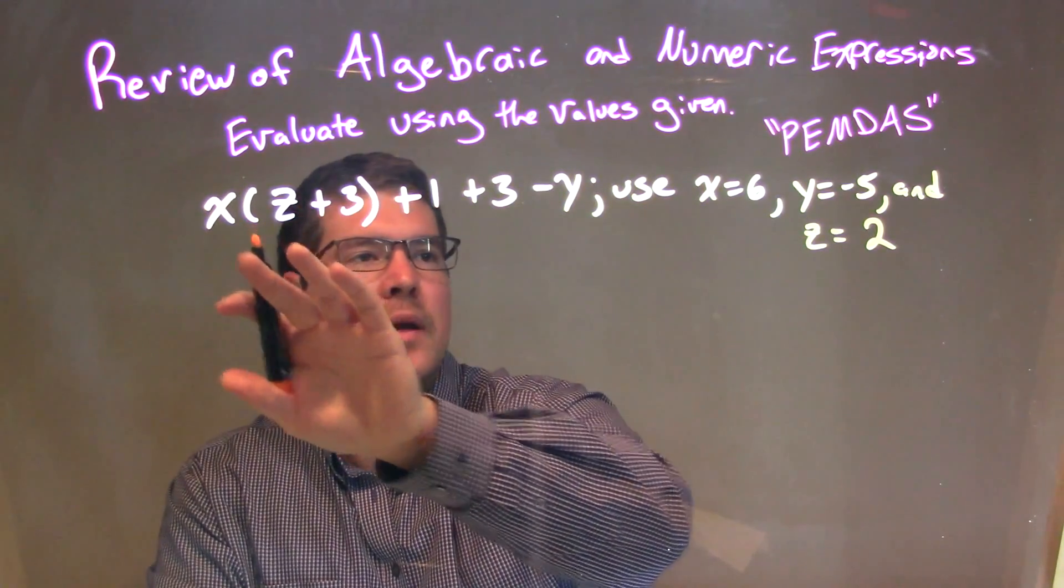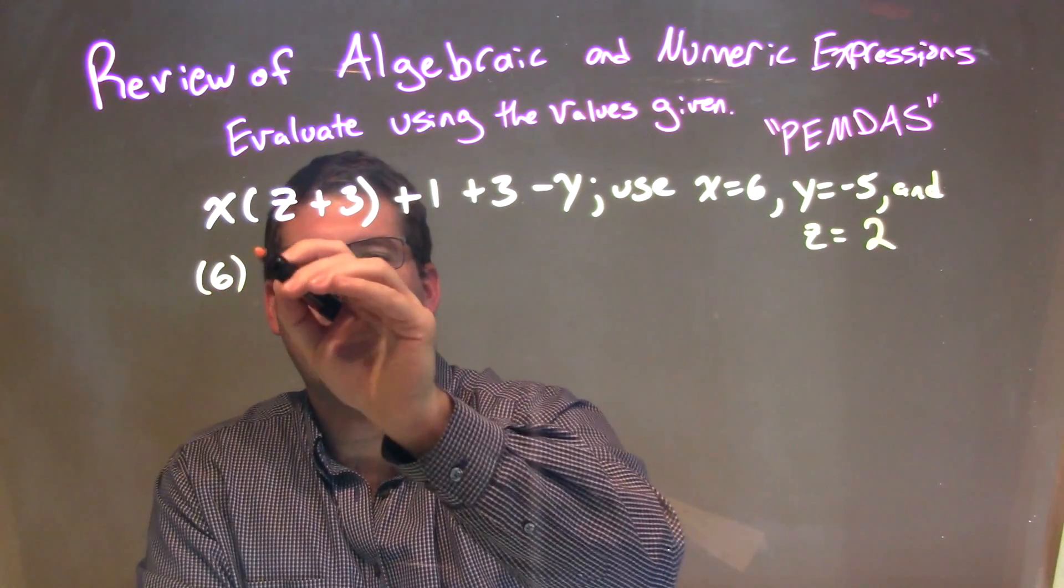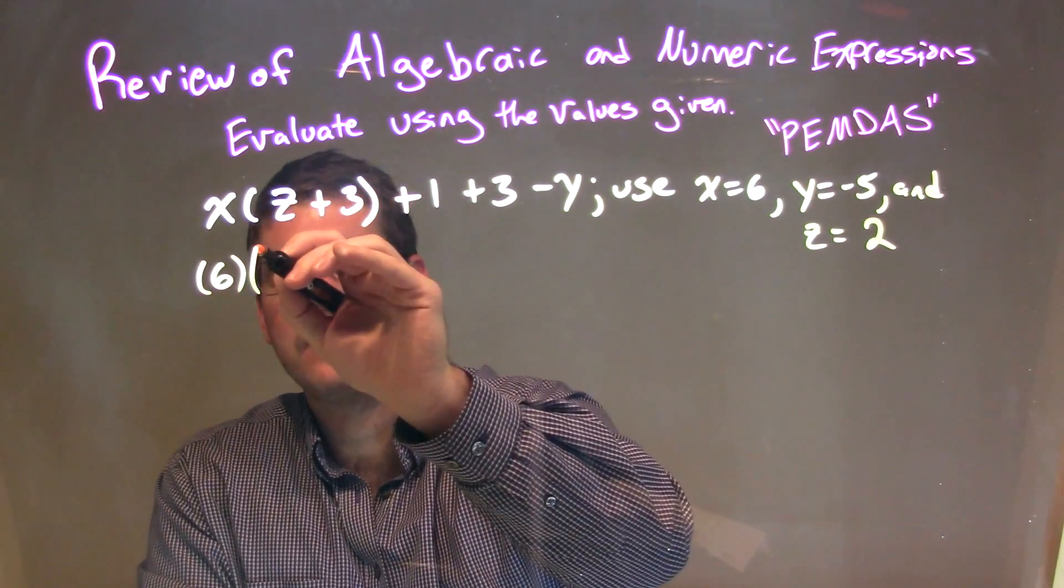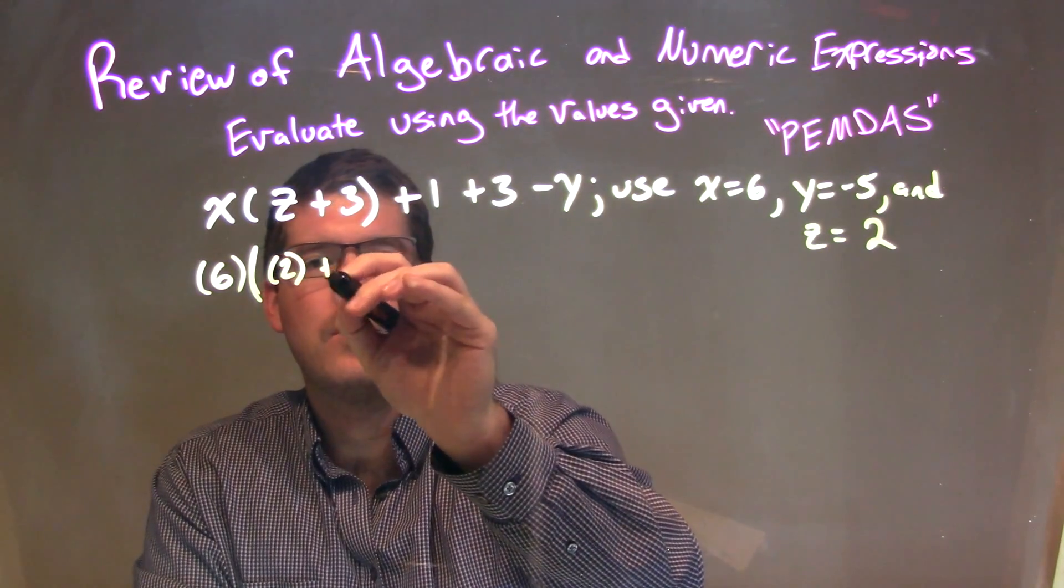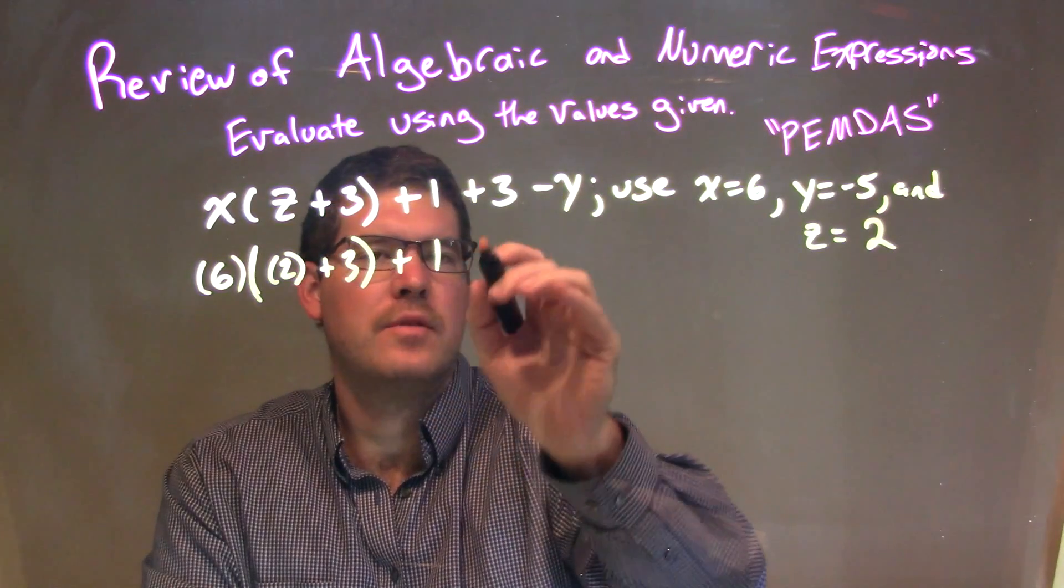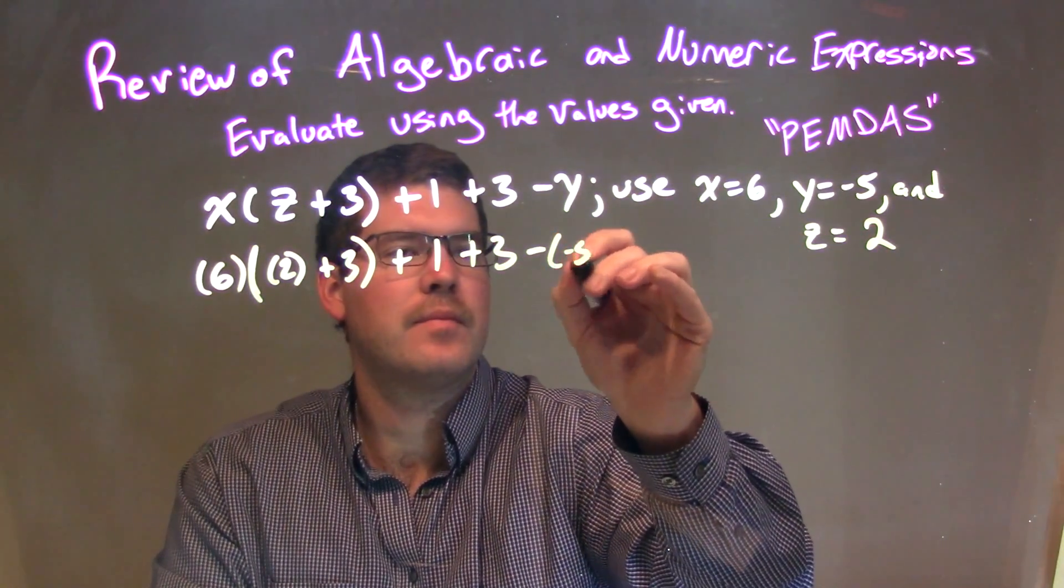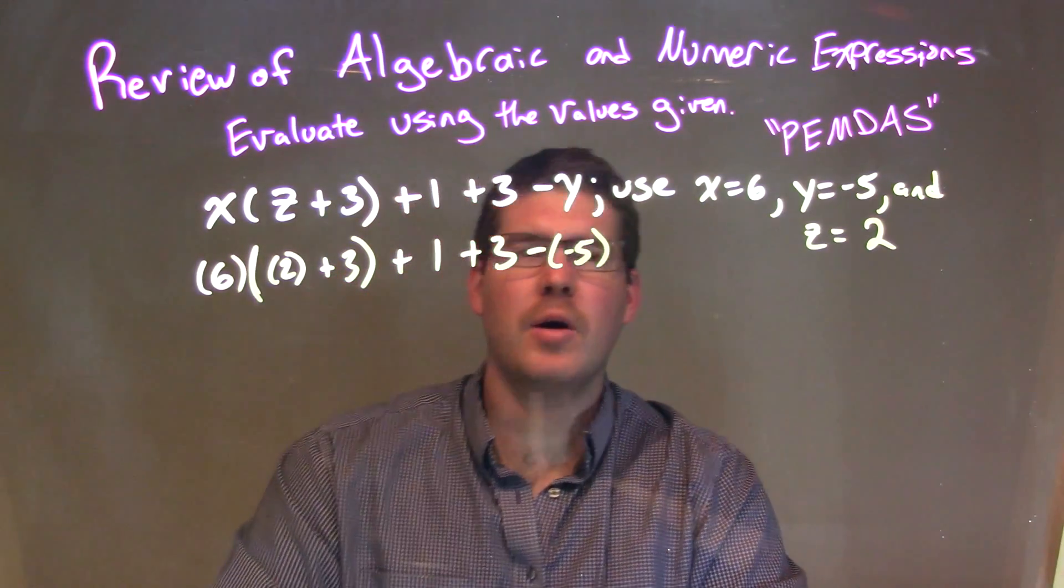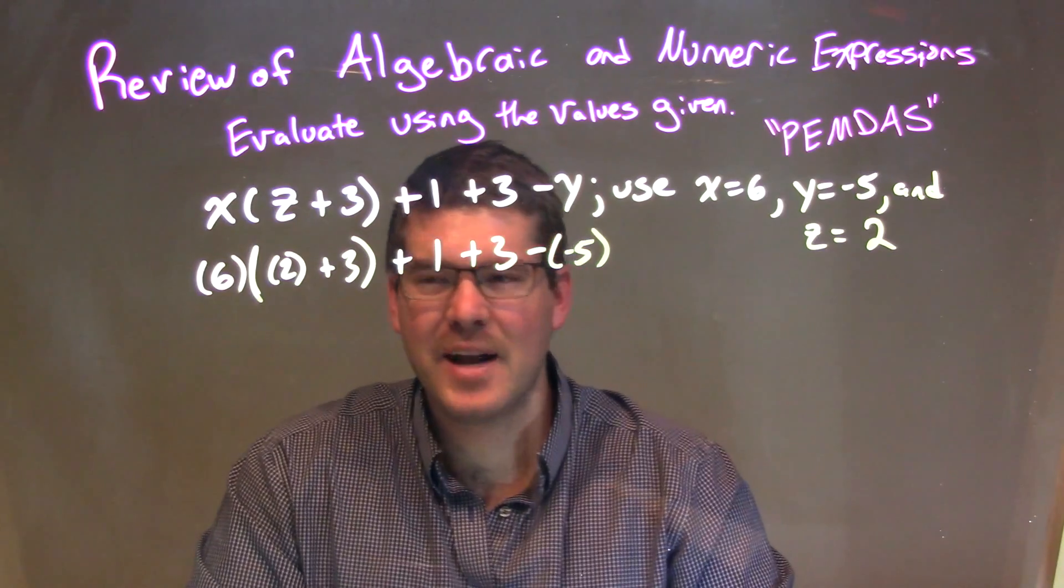I see an x right here in the beginning. I'm going to put a 6 in. So, I'm substituting 6 in for x. The z is next. So I have a big parenthesis. Now, z is just a 2, plus 3. Then, plus 1 comes down, and I close the parenthesis there, plus 3, minus my y, which is a negative 5.